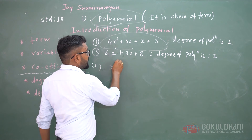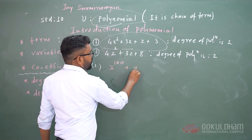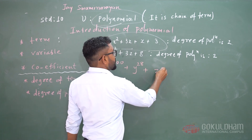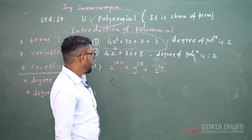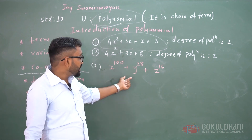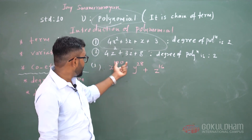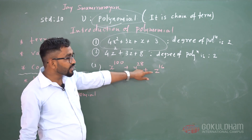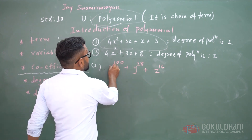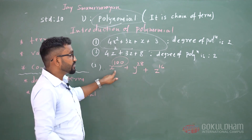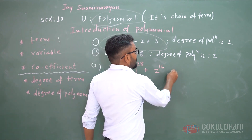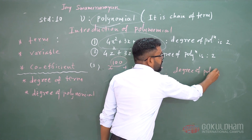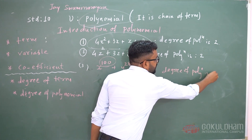Another example: x raised to 100 plus y raised to 28 plus z raised to 60. Here there are 3 variables: x, y, and z. Among these, the highest power is the power of x, which is 100. Therefore, the degree of polynomials is 100.